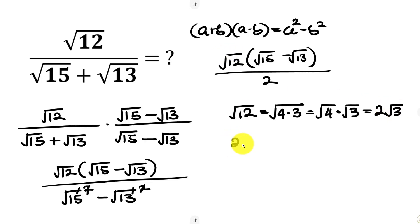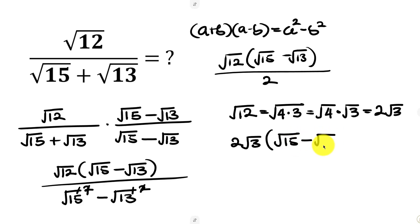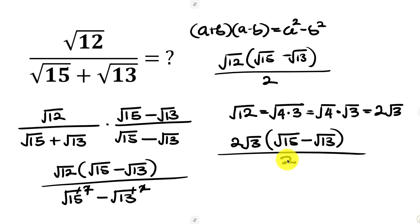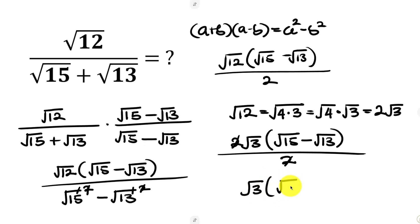So this is 2√3 replacing the square root of 12, times the square root of 15 minus the square root of 13, all over 2. Notice that this 2 can cancel with the 2 in the denominator, reducing our expression to √3 times the quantity (√15 minus √13).